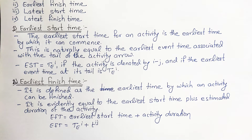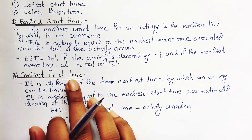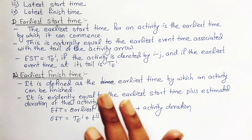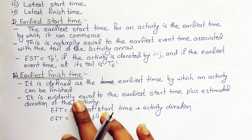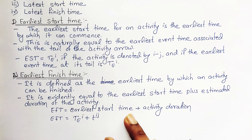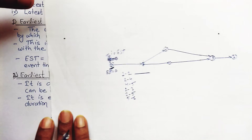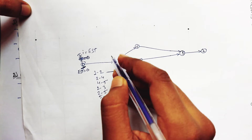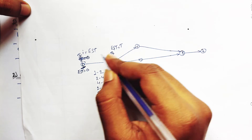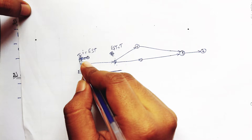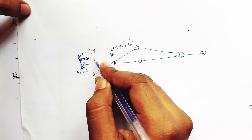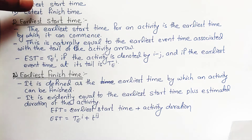The Earliest Finish Time is defined as the earliest time by which an activity can be finished. It is evidently equal to the Earliest Start Time plus the estimated duration of the activity. So: EFT = T_E(I) + t(IJ), where T_E(I) is the earliest event time of the tail event and t(IJ) is the duration of activity I→J.